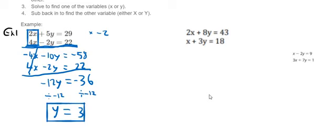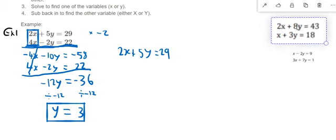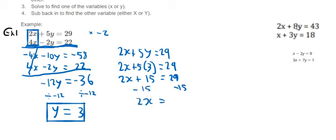The next step is to sub back in. I'm going to take one of the equations from the question — you can take the top or bottom equation, it doesn't matter. I'll take the first equation: 2x plus 5y equals 29. Because I found out that y equals 3, I'm going to sub back in. So 2x plus 5 multiplied by 3 equals 29. So 2x plus 15 equals 29. I subtract 15, so 2x equals 14. Then divide by 2, x equals 7. So x equals 7 and y equals 3.